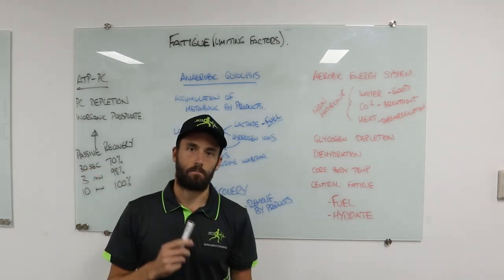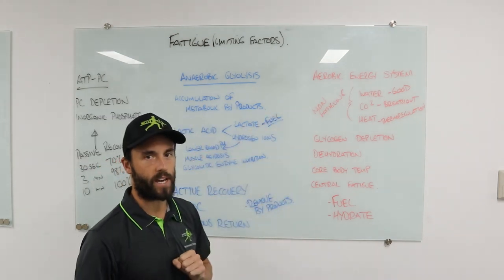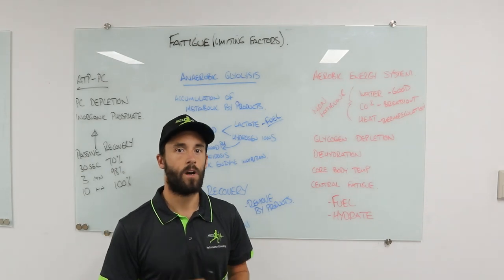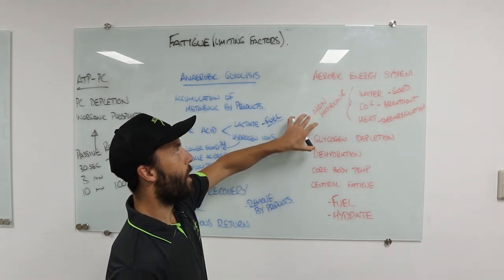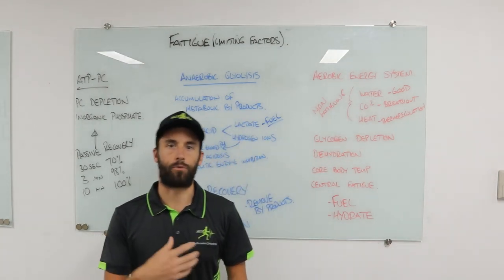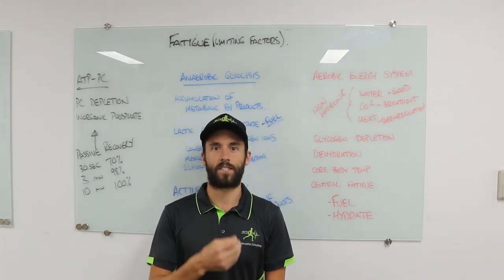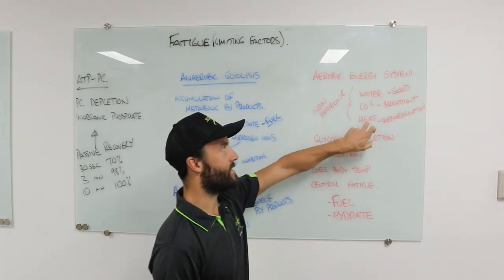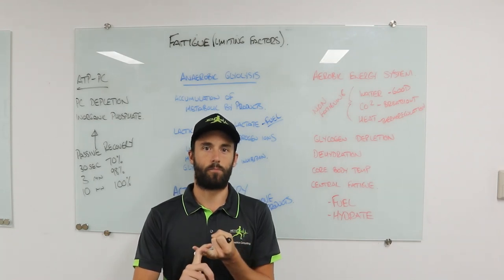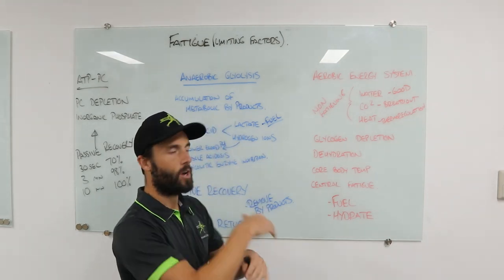For longer events — marathons, triathlons, anything from 15 minutes to multiple hours — we're using the aerobic energy system. We may have small accumulations of metabolic byproducts, but we need to stay below the lactate inflection point. The byproducts of the aerobic energy system are water, CO₂, and heat — these are non-fatiguing. Water is beneficial; CO₂ is breathed out; and heat doesn't cause fatigue because humans are very good at thermoregulating through sweating and redistribution of blood flow to the skin surface.